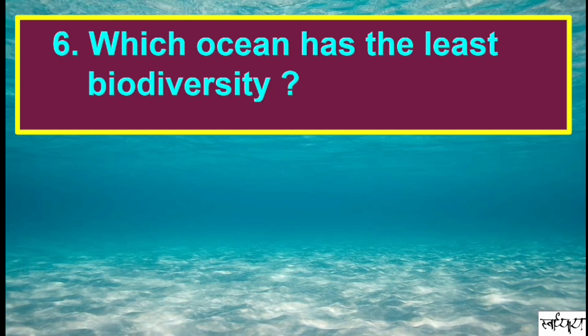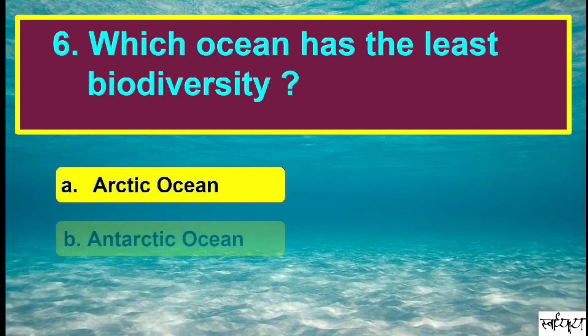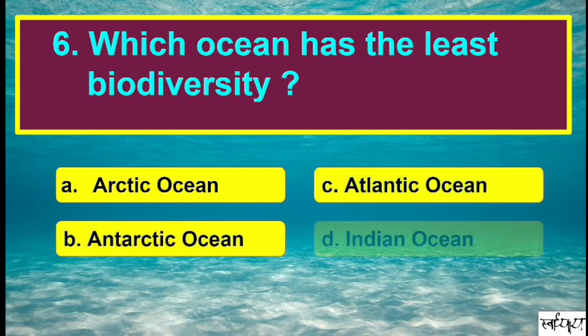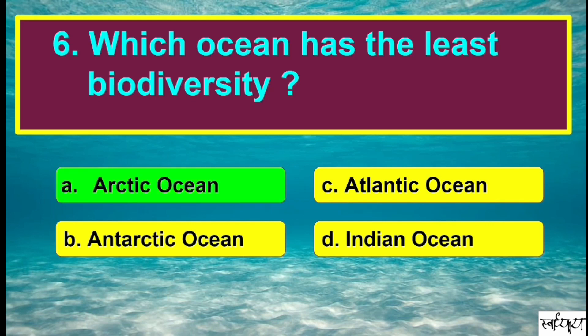Which ocean has the least biodiversity? The answer is Arctic Ocean. It has lower species diversity compared to other oceans due to its extreme cold conditions, limited sunlight, and seasonal ice cover.